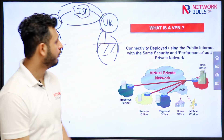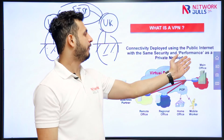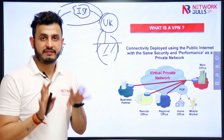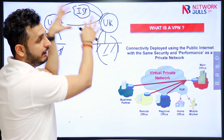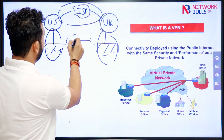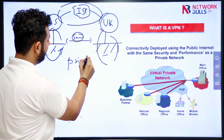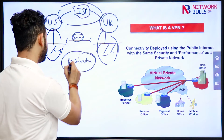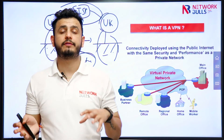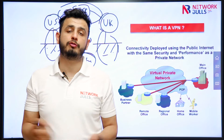You can read here: connectivity deployed using public internet with the same security and performance as a private network. Although we are connected through the internet, we want these two parties to communicate very securely, as if they are part of the same private network. So VPN is a network that is built between two private networks over a public network to provide connectivity between those private networks.